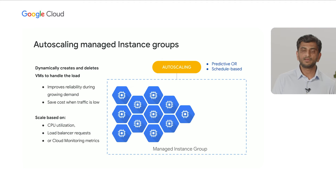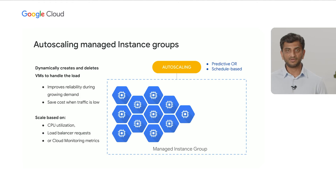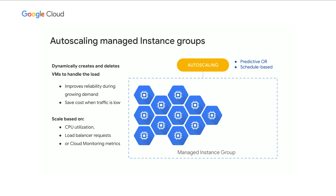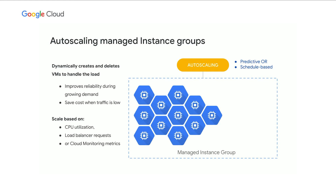With managed instance groups, you can scale up and scale down as needed. Customers have traditionally used scheduled auto-scaling — if you're expecting a peak at 9 a.m., schedule a scale-up in advance and a scale-down later in the day. With Google Cloud, you can also use machine learning to have the platform automatically scale managed instance groups up and down based on past traffic patterns, which is very useful when you don't quite know how your traffic might evolve over time.